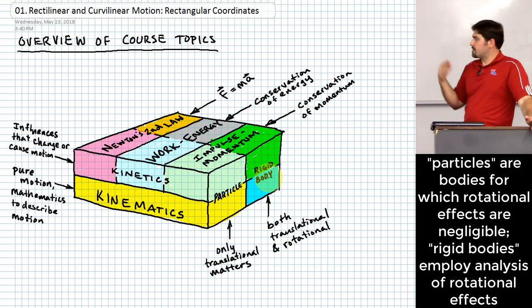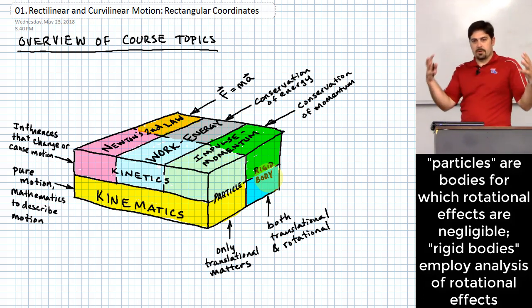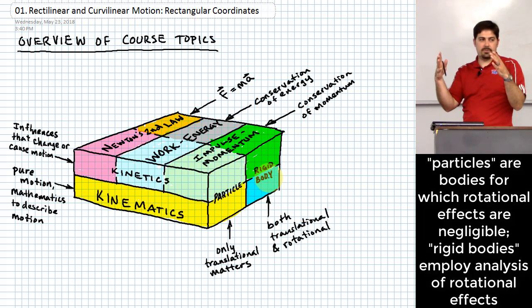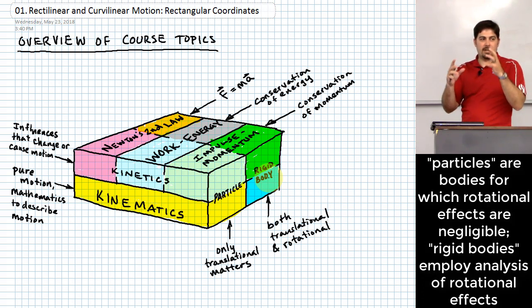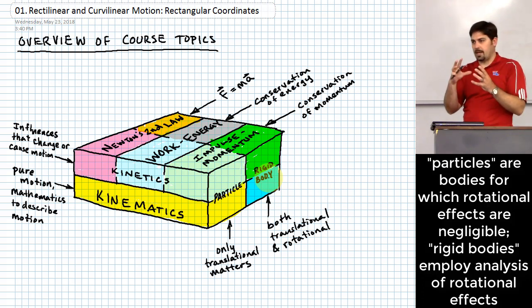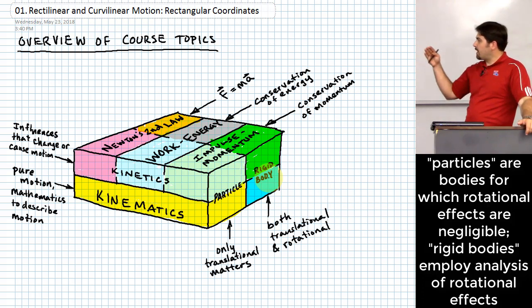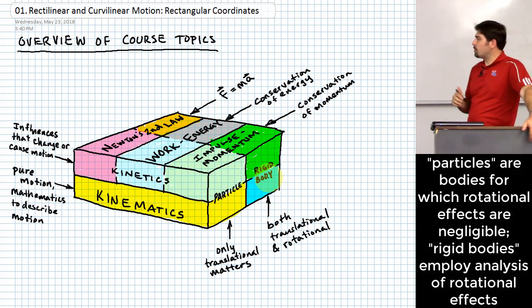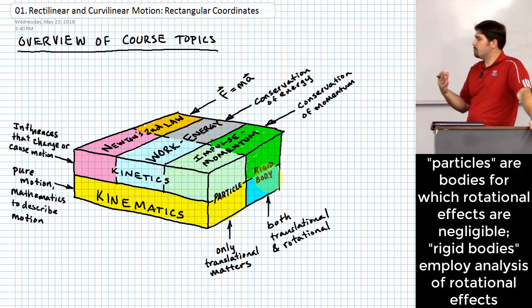We don't really care about the rotation of the object when talking about particles — we're purely looking at issues of translation. Whereas for rigid bodies, they are larger, and therefore we have to look at the balancing of forces and torques that might make the thing rotate. Those are the two different ways we can think about things moving.